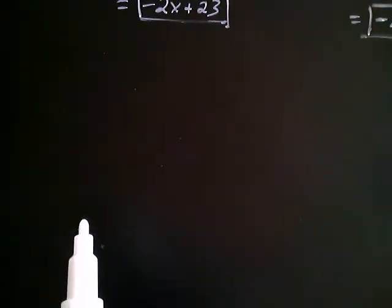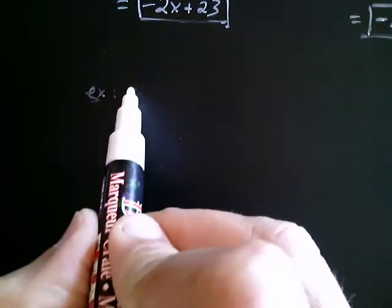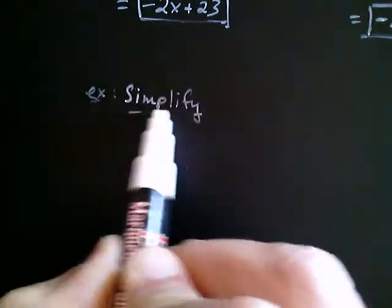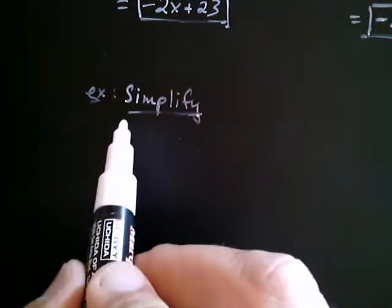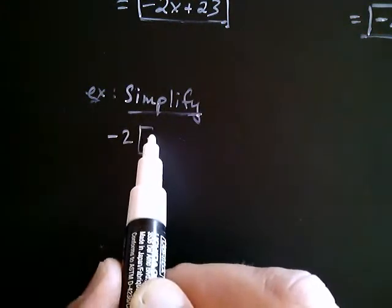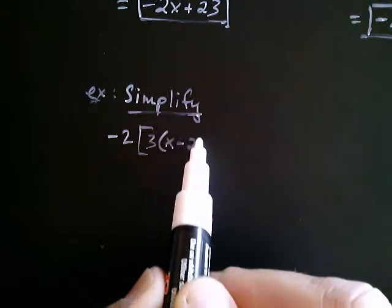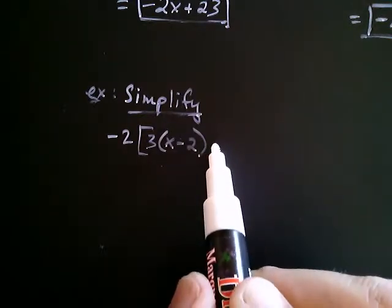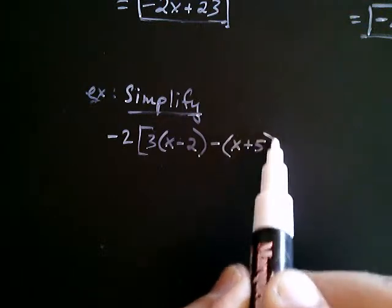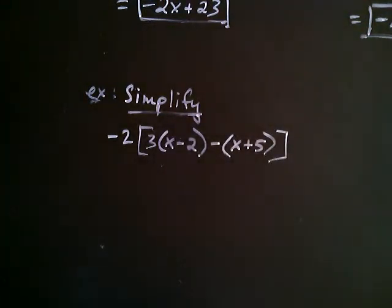So, let's go ahead and simplify the following expression. Okay, let's say that we had negative 2 multiplied by the quantity 3 times x minus 2